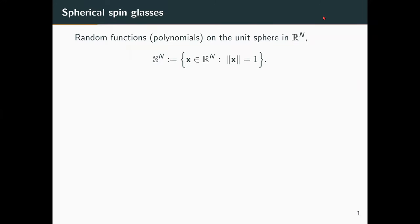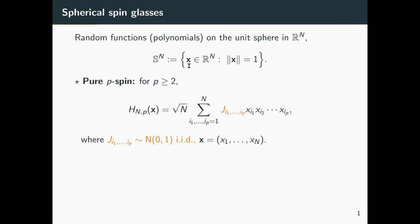Let me start with the definition of the models. These are random functions which are defined on the unit sphere. Actually, there are even random polynomials, as you see in a second. And for those of you who are familiar with the models, I'm using here a slightly different normalization and working with the unit sphere. The first models I defined are the pure p-spin models.